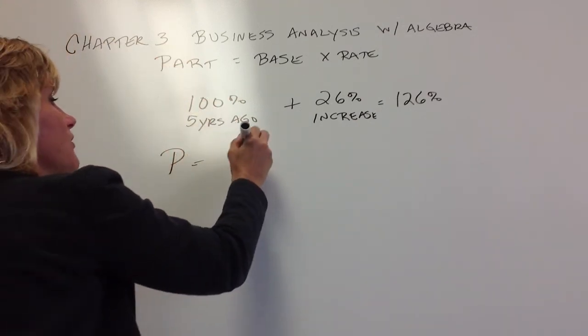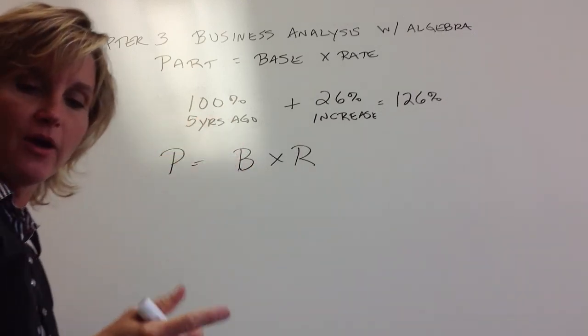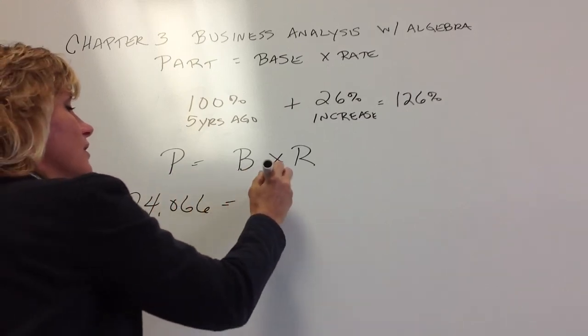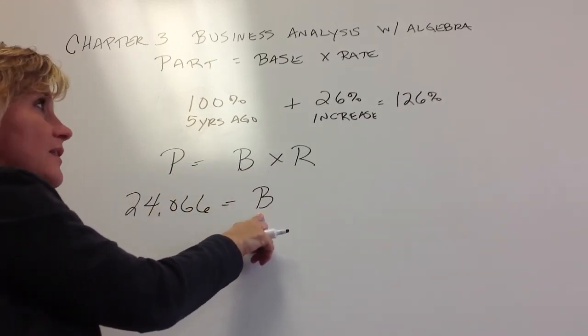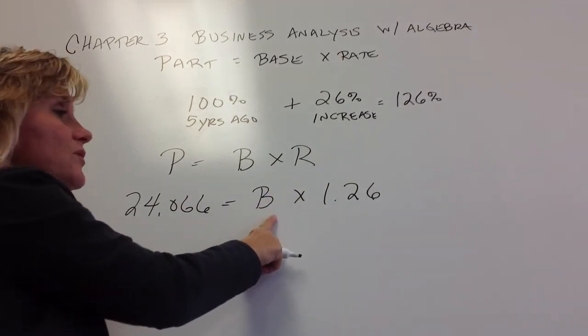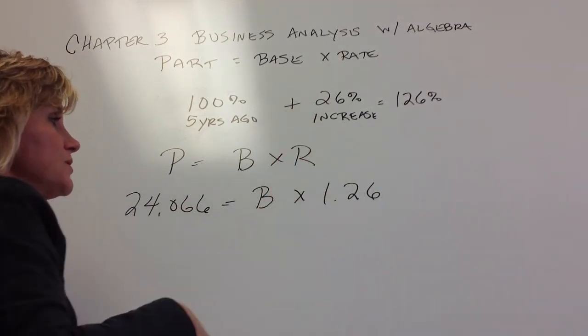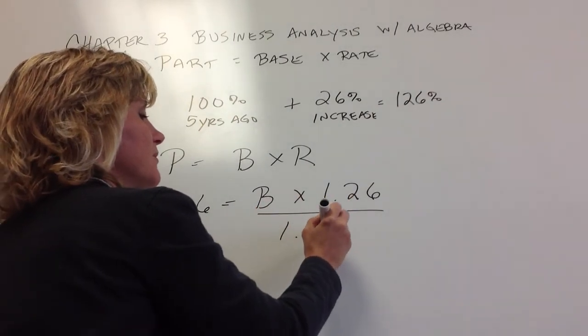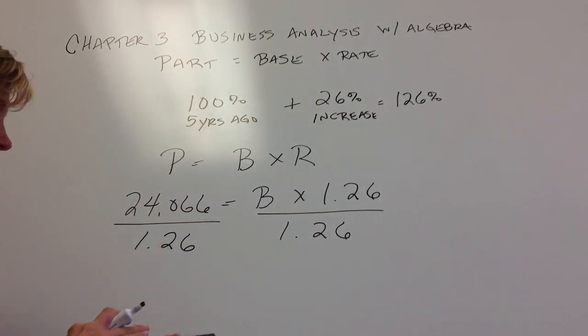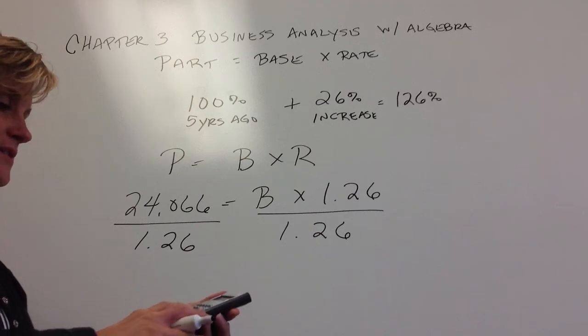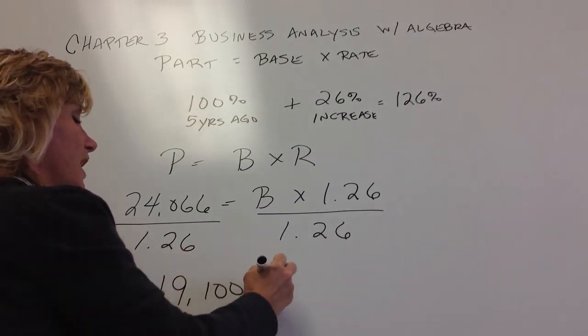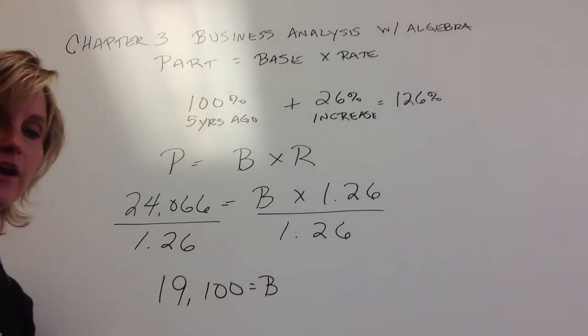So then when I come down to my part equals base times rate formula, the part is the amount that the wedding cost today, which is the $24,066. What it cost five years ago is my base, and that's what I'm looking for. But I do know that this is 126% of what it was five years ago. So again, 126% is 1.26. So then we're left to that same type formula like we had on the last one, where I'm going to divide both sides by that rate. So $24,066 divided by 1.26, or 126%, tells me that the weddings five years ago cost $19,100.